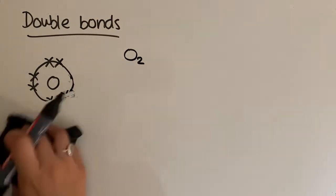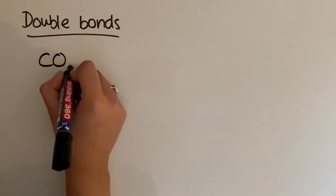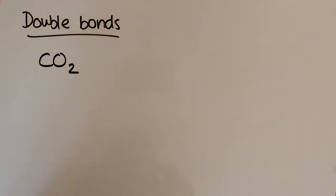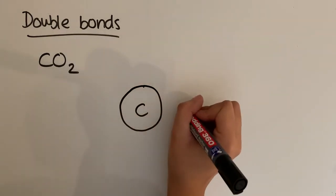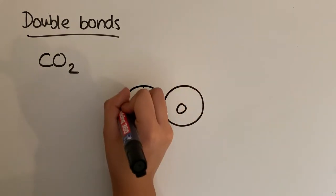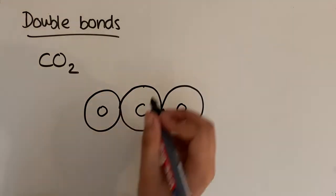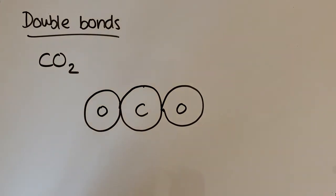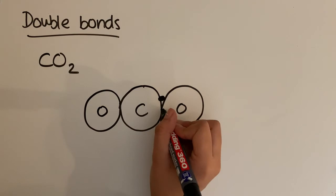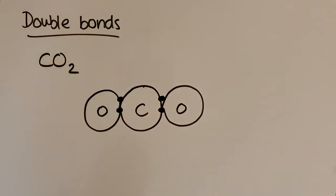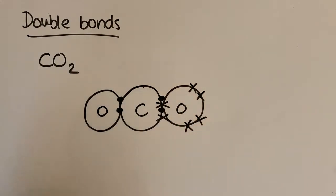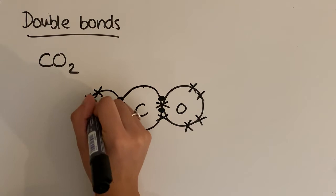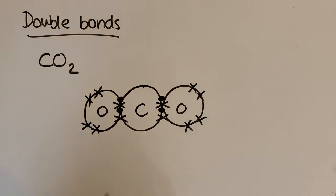Another example of double bonds is carbon dioxide, CO2. Carbon wants to form four bonds because it's group four; oxygen only wants to form two. Carbon is the central atom with an oxygen on either side. Carbon starts with four electrons and shares them with the oxygens; each oxygen starts with six electrons and shares two of those. Each oxygen starts with six electrons — confirmed — and carbon has four.